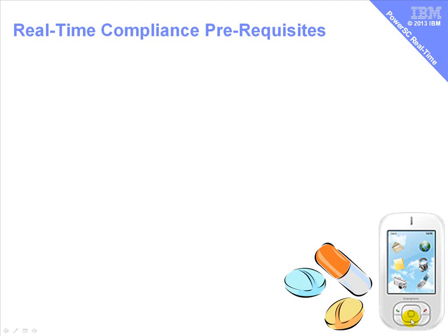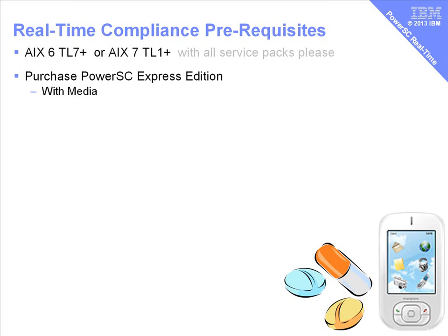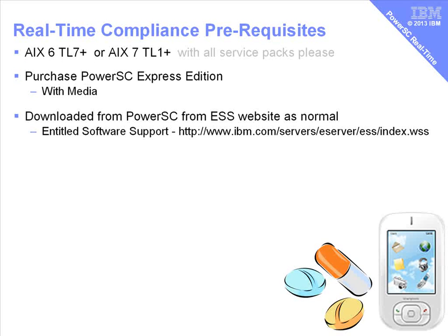Let's look at the prerequisites for installing it. First we need AIX 6 TL7 or AIX 7 TL1 or above. Please don't forget to put all the current service packs in here. You need to purchase the Power SC Express Edition or the standard edition - it includes it too - and you'll get the media. Or alternatively, you can download the latest version from the Entitled Software Support website. You'll have to prove that you're the owner of a particular serial number machine and entitled to the software.